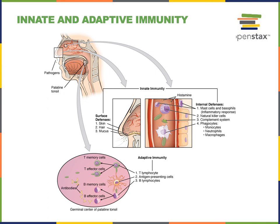Natural killer cells are a type of lymphocyte that is part of innate immunity. While most lymphocytes — the T lymphocytes and B lymphocytes — are part of the adaptive immunity, natural killer cells can recognize virally infected cells and stimulate apoptosis of those cells to prevent the virus from spreading. Natural killer cells are not specific for any particular virus; they recognize chemical signals associated with a virally infected cell in general, not a cell infected with a specific type of virus.